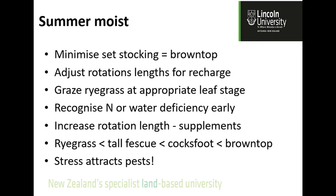In summer-moist areas, minimize set-stocking unless you want brown top. Adjust rotation lengths to allow for recharge. Graze ryegrass at the appropriate leaf stage — somebody did a PhD on exactly when to graze ryegrass, and we forgot to listen. Recognize that nitrogen or water deficiencies cause leaf area loss before you've even thought about it, meaning lost light interception and lost carbon. Increase rotation lengths rather than shorten them; feed out supplements. Remember that ryegrass is the baby of our grasses and needs the most care. Tall fescue is more resilient, cocksfoot even more so, and brown top thrives under neglect. If your plant is under stress, it will also attract pests. Hopefully I've covered Plant Science 101 — thank you very much.